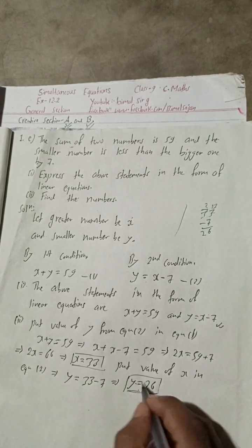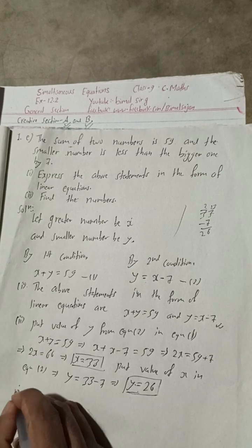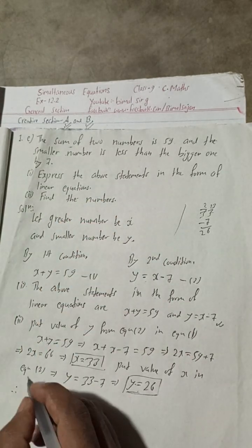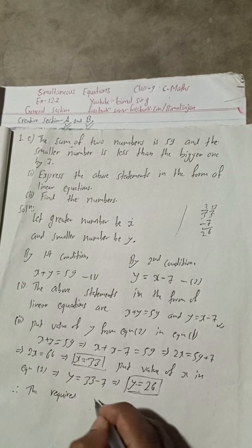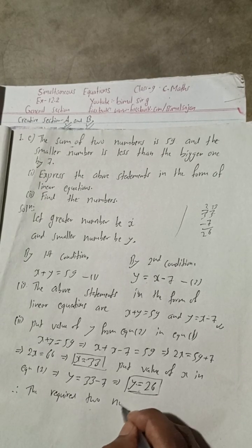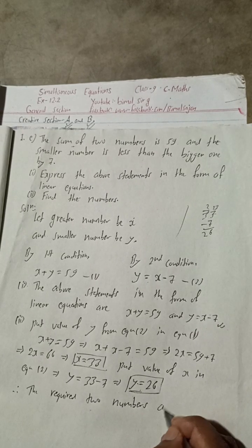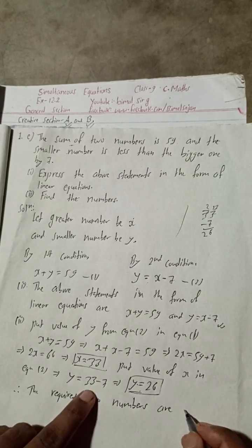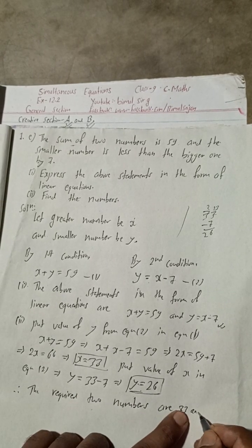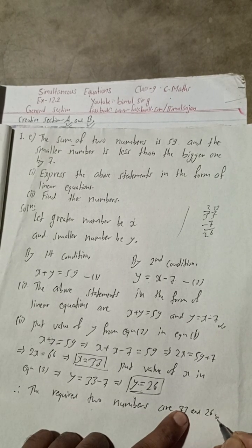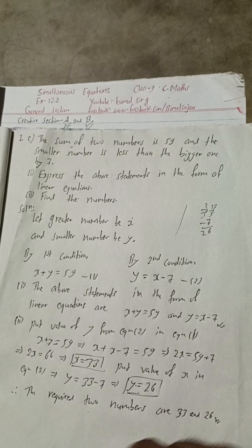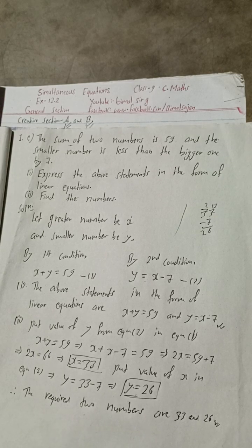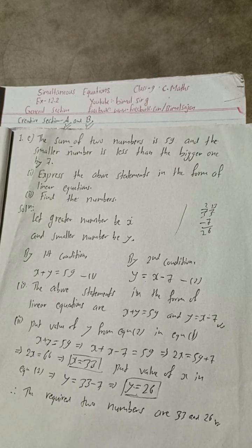Therefore, the required two numbers are 33 and 26. This is the complete solution of question 1E. I have already uploaded all solutions for creative section A and creative section B on my Bimbal Sarji YouTube channel.